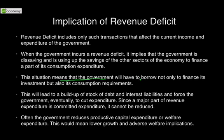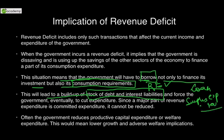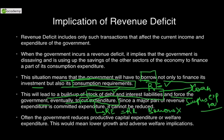This situation means that the government will have to borrow not only to finance its investment, but also its consumption requirements. If they have to meet their revenue expenditures, they have to borrow money. This will lead to a build-up of stock of debt and interest liabilities. You will either take a loan or use the surplus of any other kind of revenue. If you take a loan, it would add to the interest liabilities or add to the debt. This forces the government to eventually cut expenditures — in order to reduce debt and interest liabilities, the government cuts revenue expenditures to match revenue receipts and avoid borrowing.